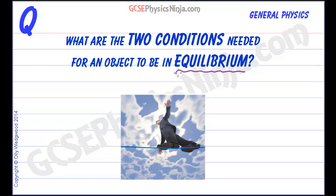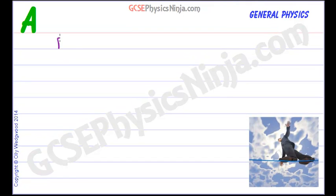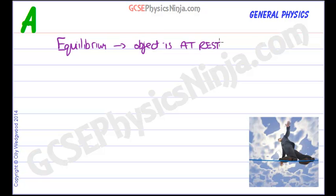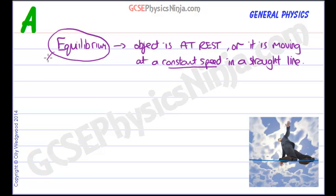Equilibrium is when a body or an object is either at rest — stationary, not moving — or it is moving at a constant speed in a straight line. So that's what equilibrium means, and you can think of it as being balanced.